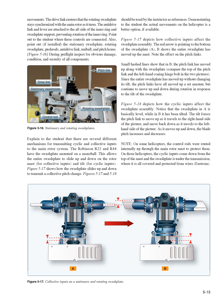Figure 5-17 depicts how collective inputs affect the swashplate assembly. The red arrow points to the bottom of the swashplate. B shows the entire swashplate has moved up the mast; note the effect on the pitch links, which have moved up along with the swashplate. Since the entire swashplate has moved up without changing its tilt, the pitch links have all moved up a set amount but continue to move up and down during rotation in response to the tilt of the swashplate. Figure 5-18 depicts how cyclic inputs affect the swashplate assembly. Notice that the swashplate in A is basically level, while in B it has been tilted. The tilt forces the pitch link to move up as it travels to the right-hand side and move back down as it travels to the left-hand side. As it moves up and down, the blade pitch increases and decreases. On some helicopters, the control rods are routed internally up through the main rotor mast for protection.